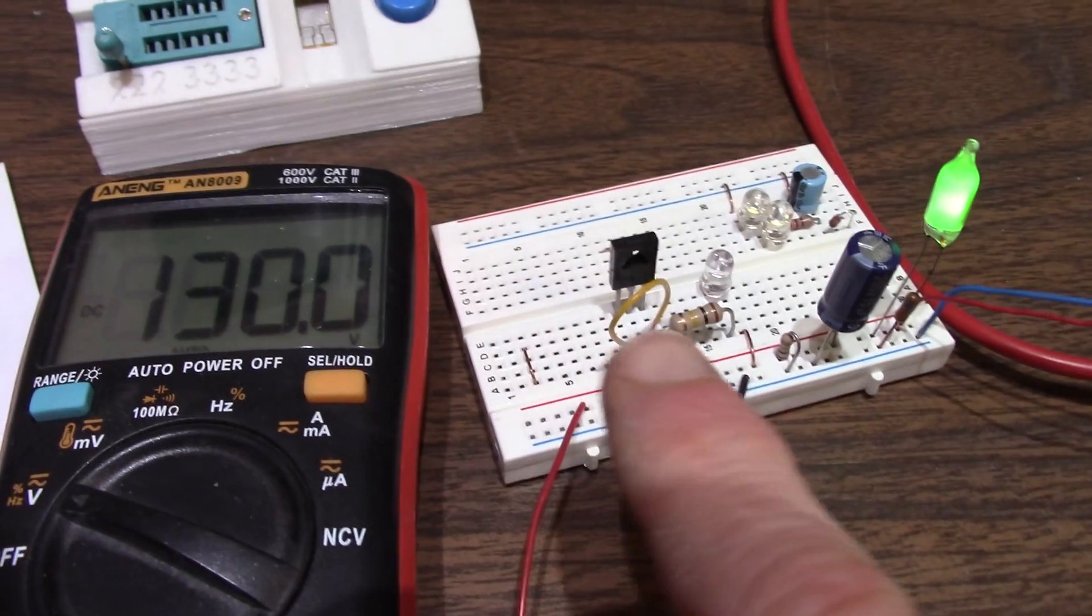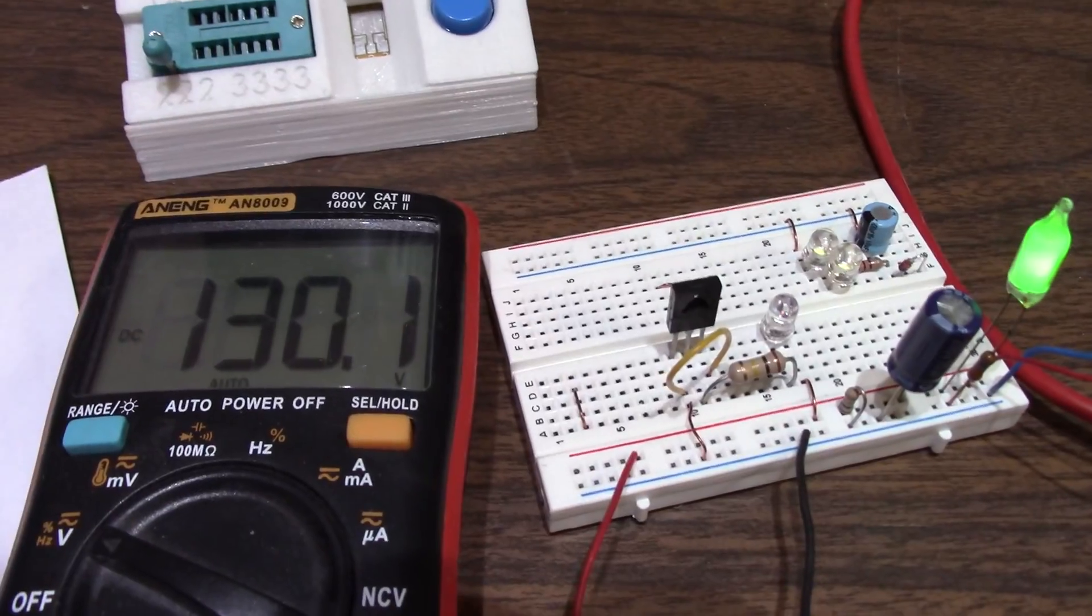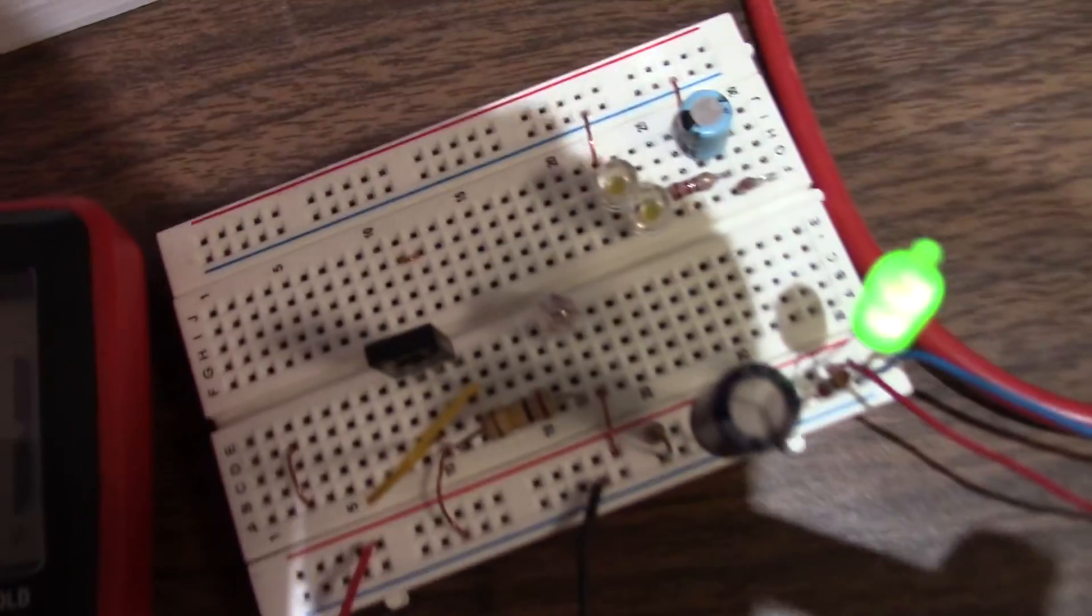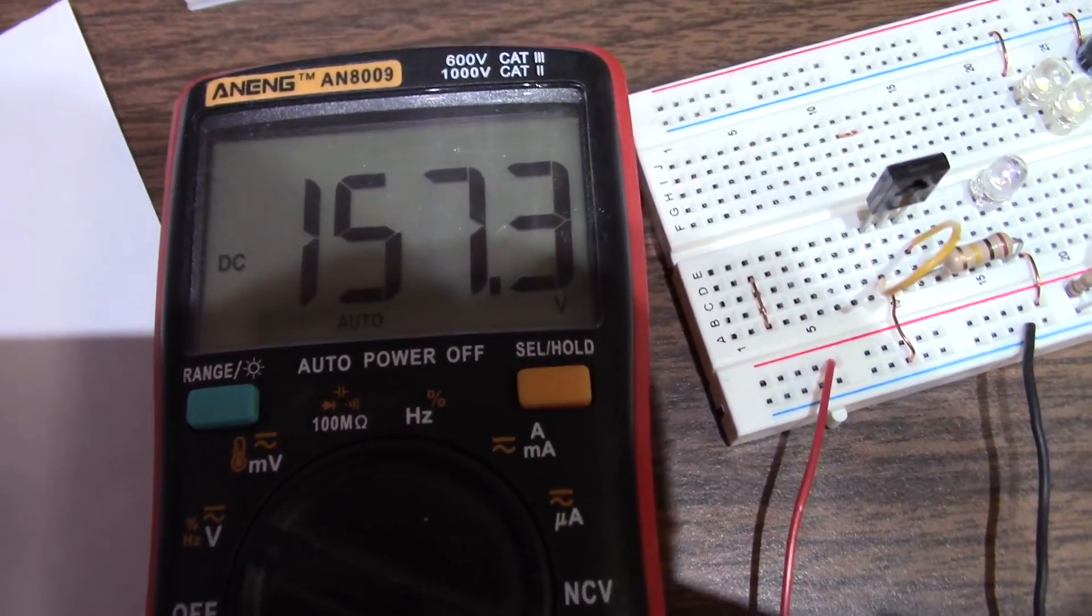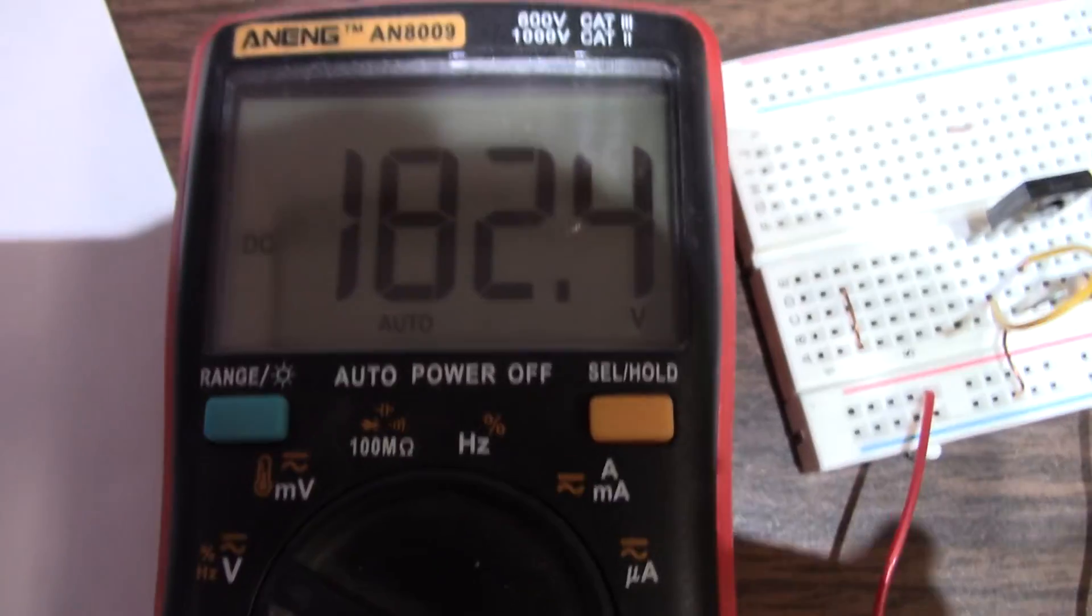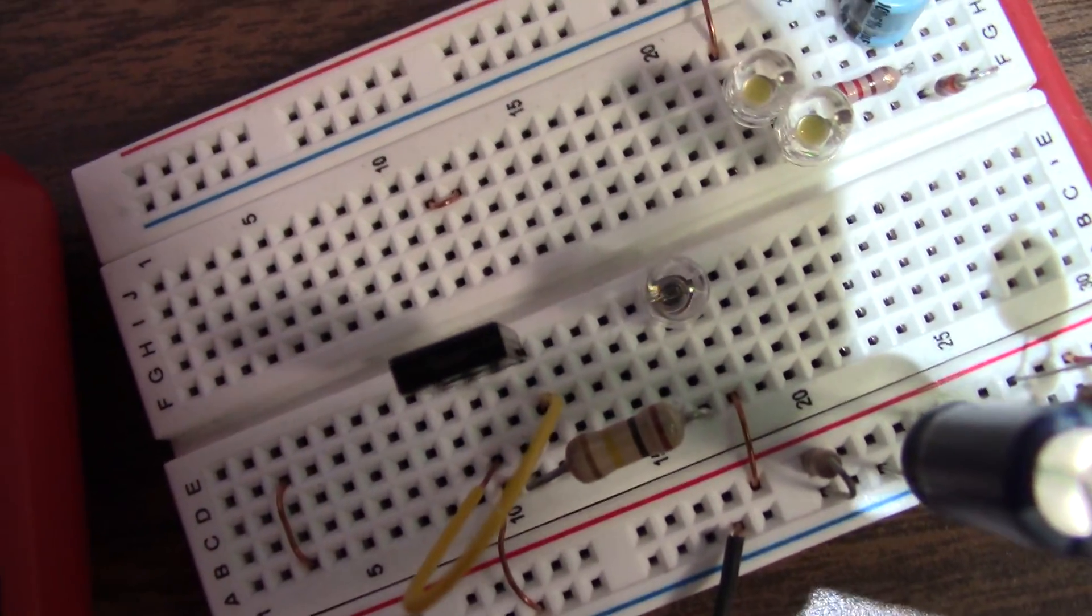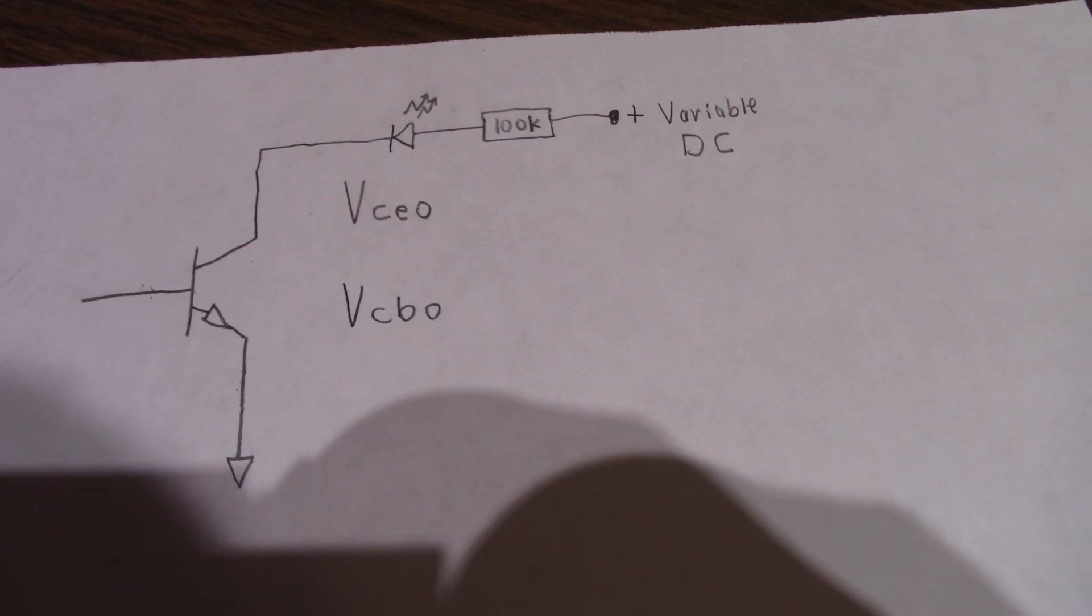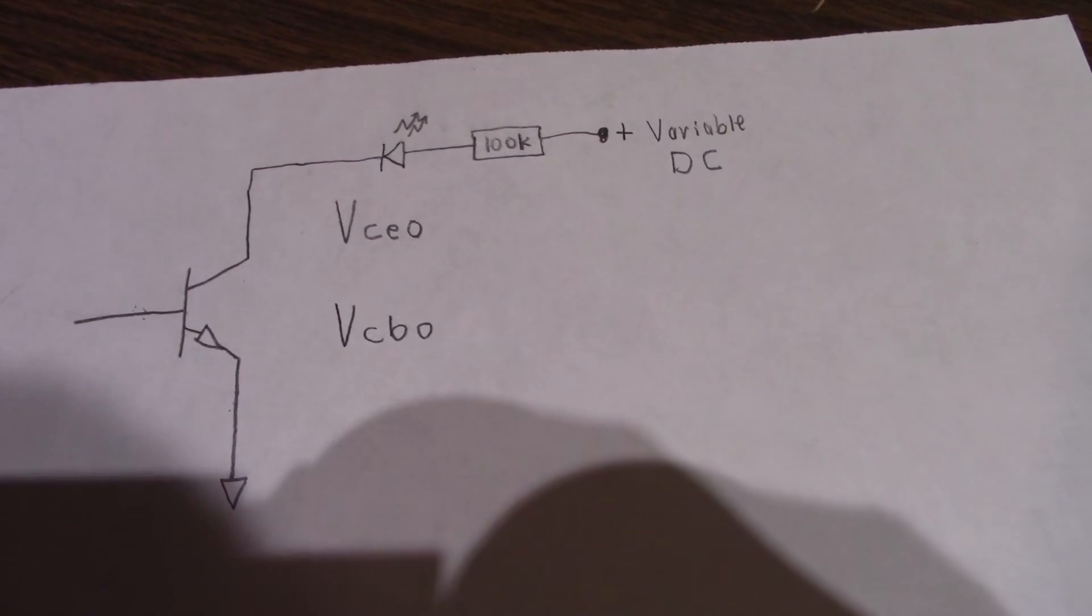Okay, so I jumpered the base and the emitter together. We're at 130 volts. Let's crank it up. Nothing. Okay, well, I can't go any higher. It's as high as I can go. 182 volts. And it's dead. LED is out. So, that's interesting. Shorting the emitter and base together seems to increase this breakdown voltage.